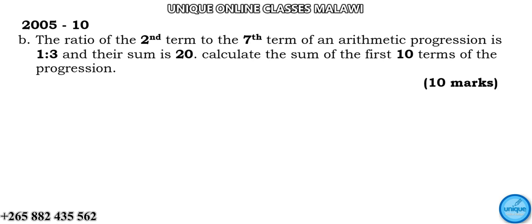Let's see how we can solve this arithmetic progression problem. It was question number 10 from the 2005 exam, worth 10 marks — question number 10b. The ratio of the second term to the seventh term of the arithmetic progression is 1 to 3, and their sum is 20. We have been asked to calculate the sum of the first 10 terms in the sequence.